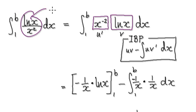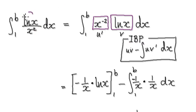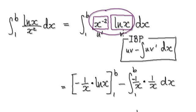Integrating this, let's rewrite it — we need to use integration by parts, so rewrite the integrand as one thing multiplying another. Let this part be u prime, and let this part be v.